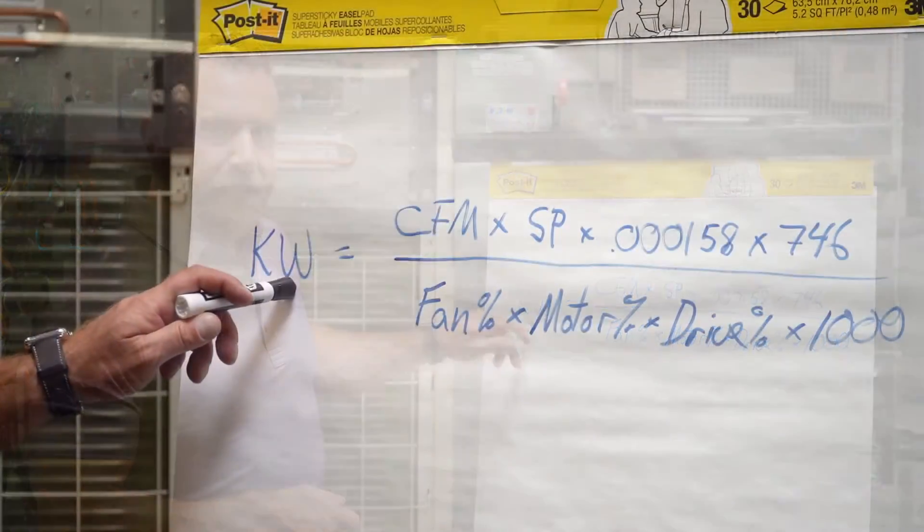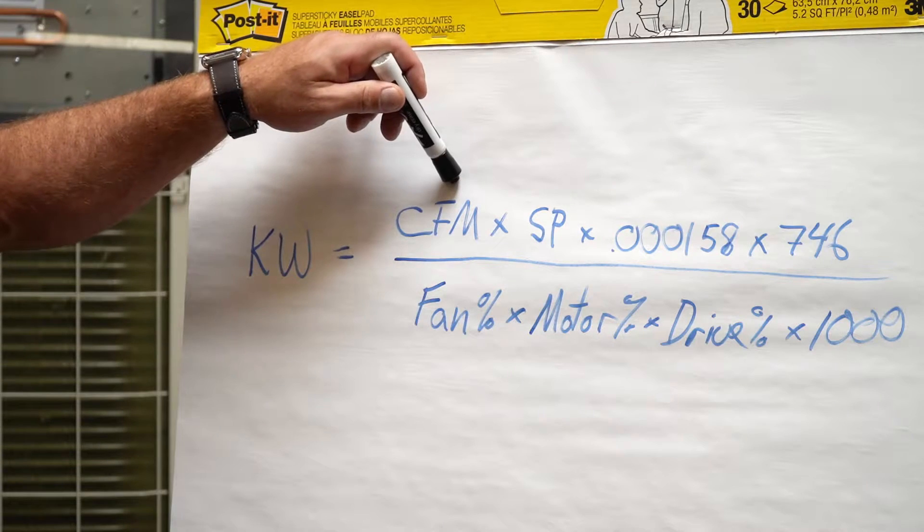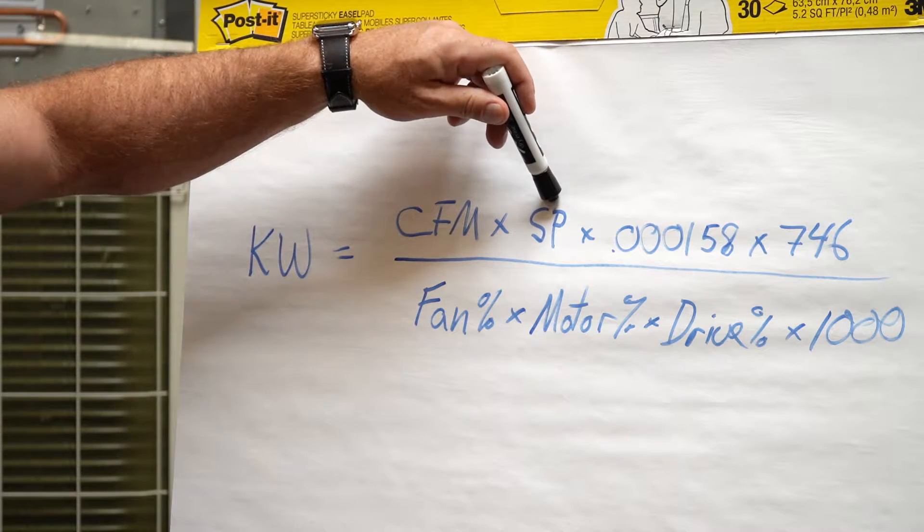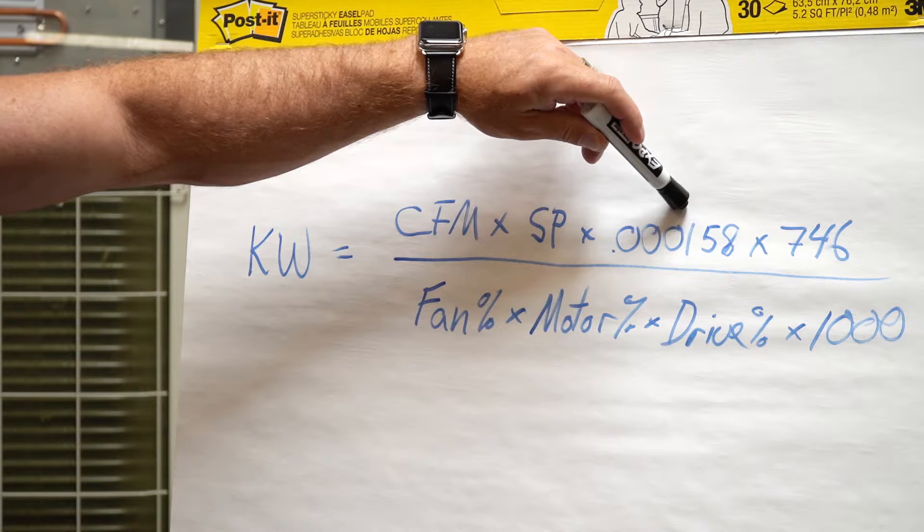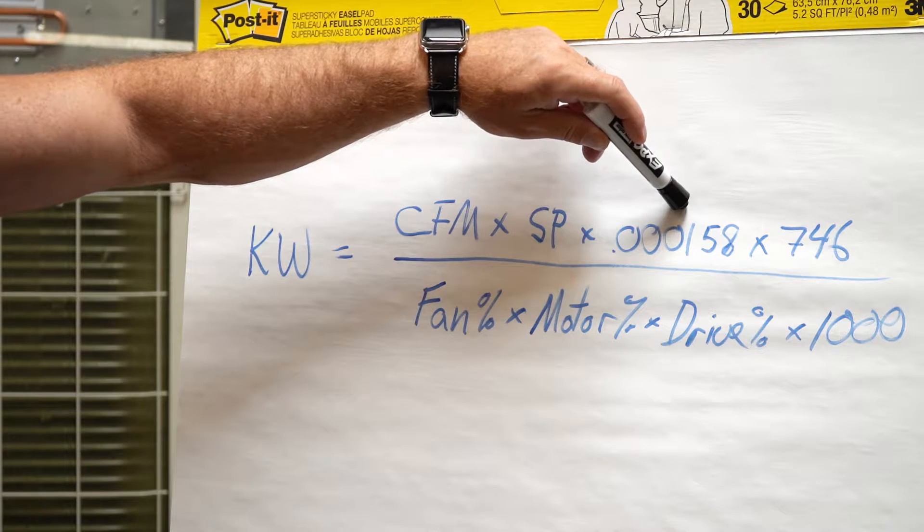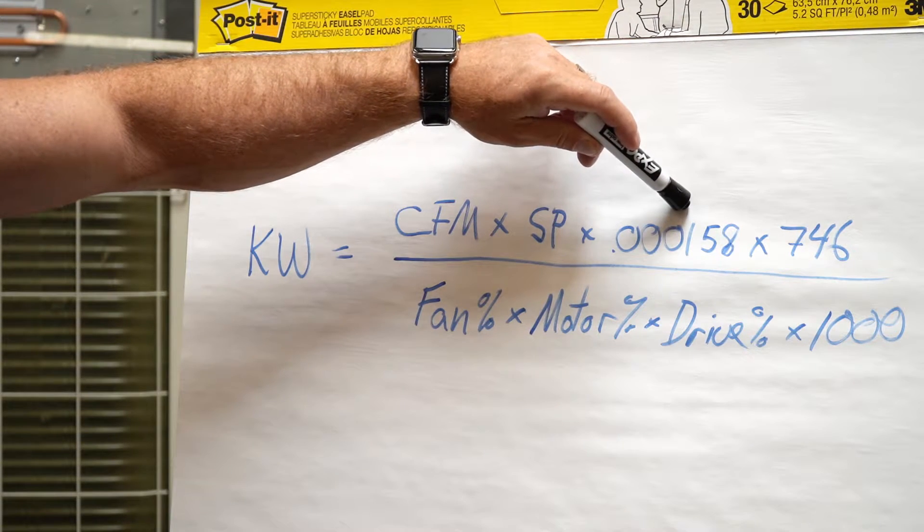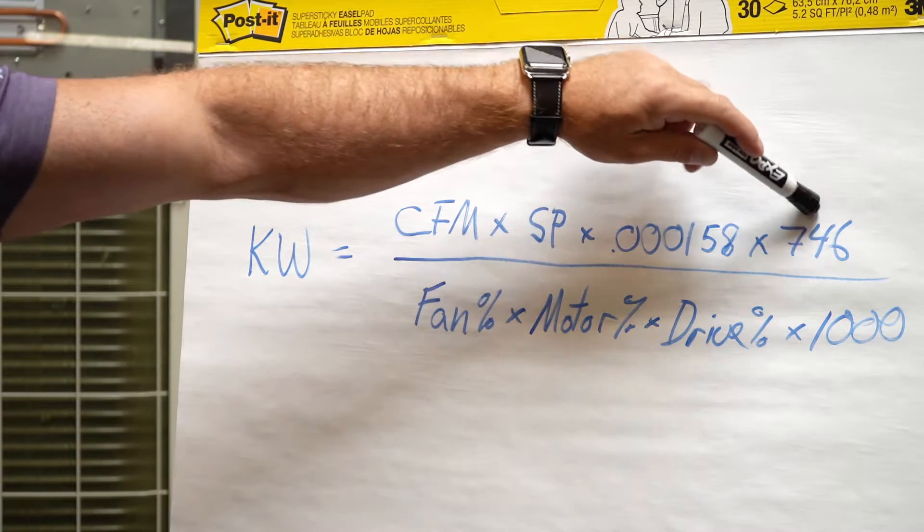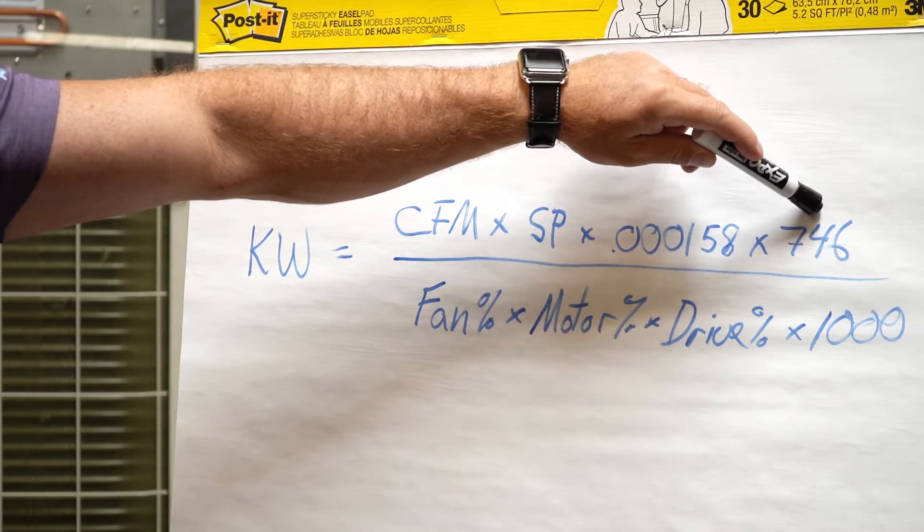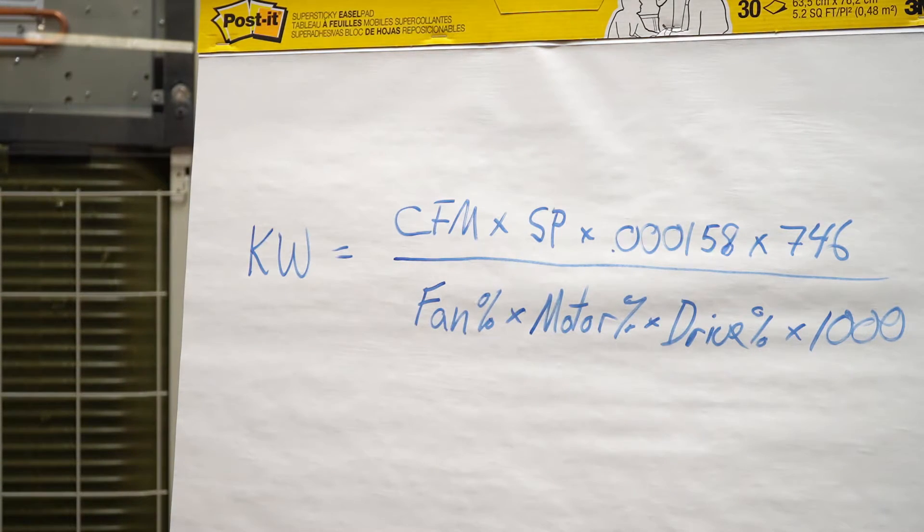This equation is currently set up to calculate KW, so we're going to take our airflow in CFM multiplied by our system static pressure multiplied by .000158, which is our conversion factor for standard temperature and pressure, times 746. And the 746 component is our conversion factor between horsepower and KW.